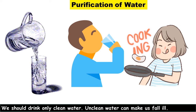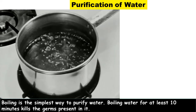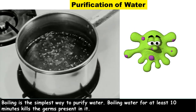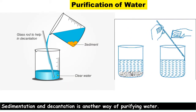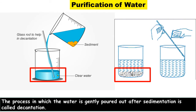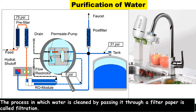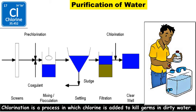Purification of water: We should drink only clean water, as unclean water can make us fall ill. Water from taps can be dirty and impure, so water used for drinking and cooking needs to be purified. Boiling is the simplest way to purify water — boiling water for at least 10 minutes kills the germs present in it. Sedimentation and decantation is another method: the process in which insoluble impurities settle down is called sedimentation, and gently pouring out the water after sedimentation is called decantation. Filtration is a better process — water is cleaned by passing it through a filter paper. Chlorination is a process in which chlorine is added to kill germs in dirty water.